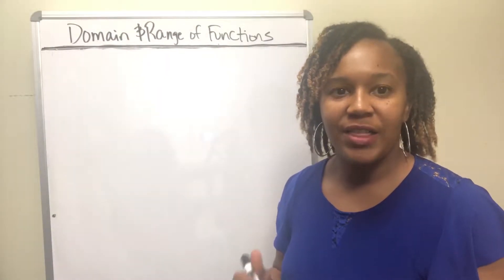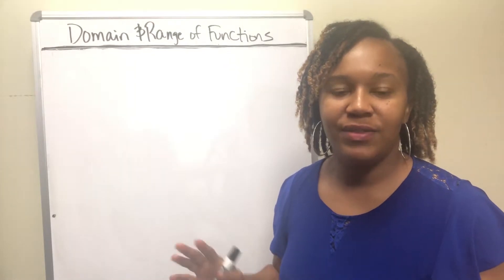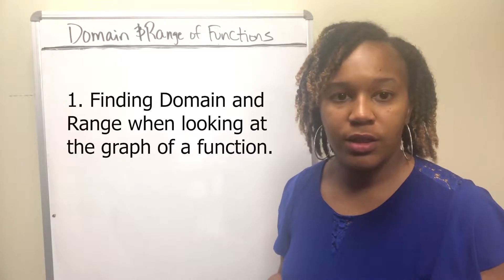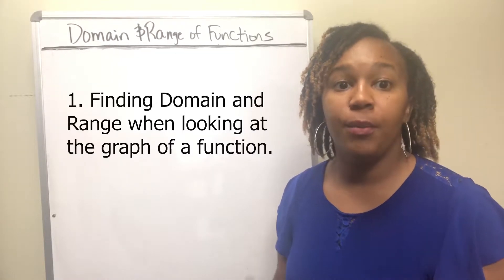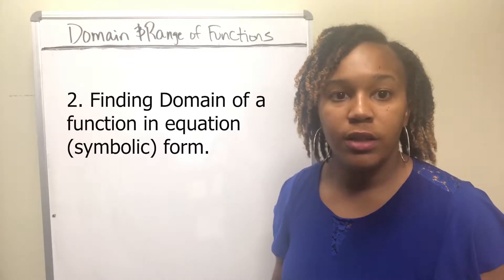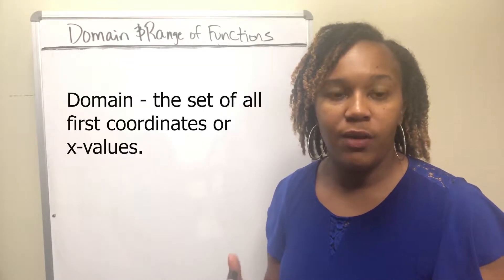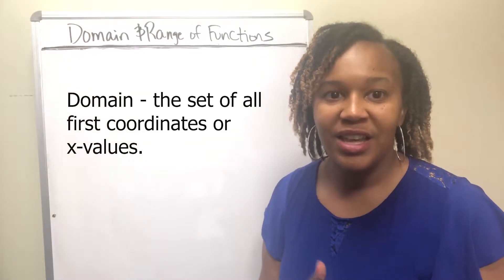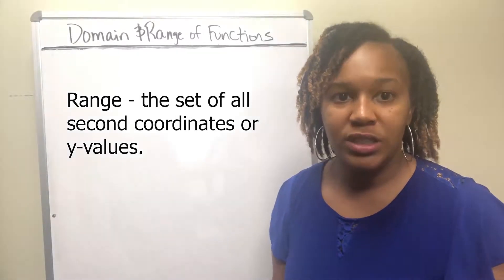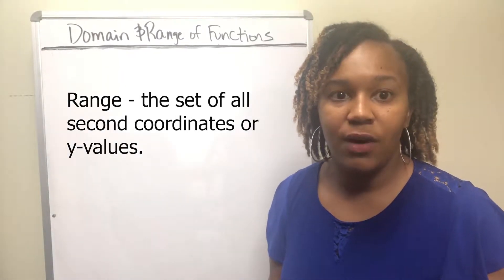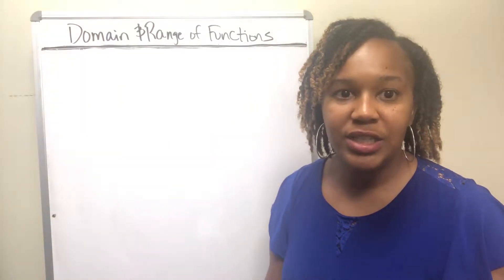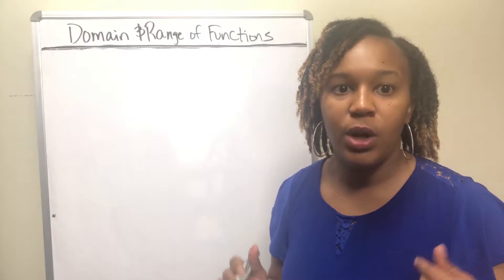In this video, we're going to talk about how to find the domain and the range of a function. We're going to look at how to find the domain and range when you're looking at the graph, and then we're going to talk about how to find the domain when you're looking at the equation form of the function. First, recall that the domain is the set of all the first coordinates, which is usually x, and the range is the set of all the second coordinates, which is typically y. Domain refers to all your x's and range refers to all of your y's.